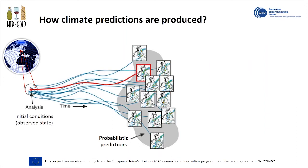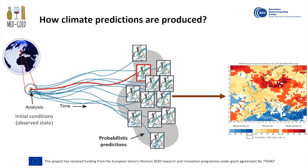Climate predictions are obtained from models. These models use the observed state of the different components of the climate system, such as the atmosphere, ocean, sea ice, snow cover, etc., to predict a range of possible outcomes for the future. If we separate these possible predictions into three groups — one for below normal conditions, one for normal, and one for above normal conditions — we obtain the probabilities of future temperature conditions. Before obtaining this map with temperature conditions, we correct possible biases due to model imperfection and make an assessment of the prediction quality.